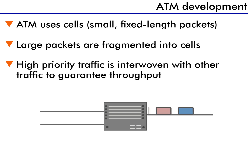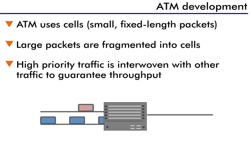Using this train analogy, we now understand how a regular switch using Ethernet handles data priority. In fact, it doesn't prioritize.